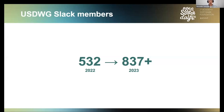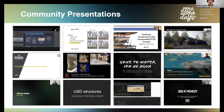A key stat: last year on August 15th we had 532 members on the Slack channel for our working group. Yesterday, another August 15th, we had 837 members — and today even more. It's been fantastic to see all these people join, contribute, be active on the Slack channel, and talk about all things USD and community issues.